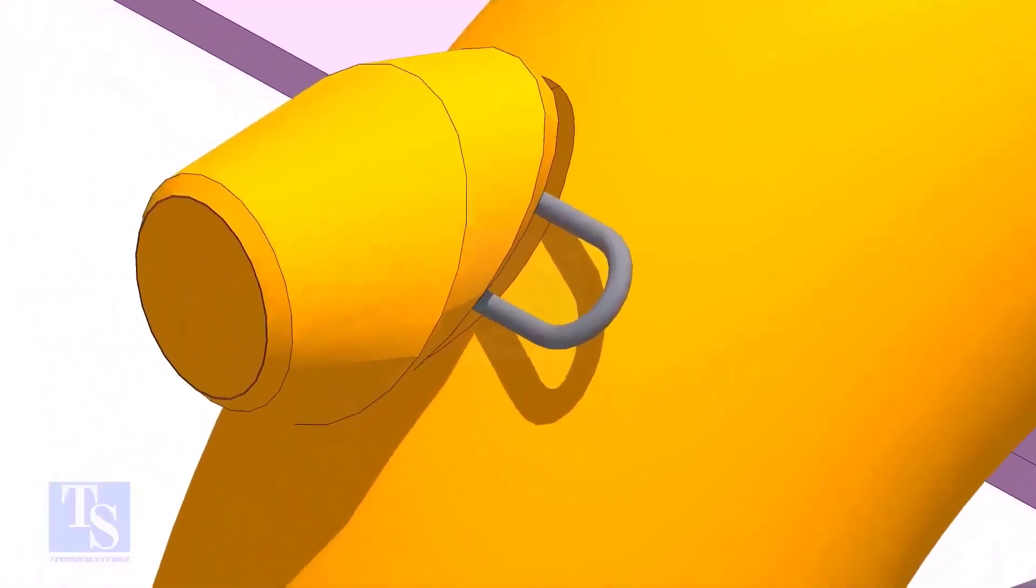Tack weld at one side of the elbowlet just to hold the elbowlet in its position. Don't make too big or too small tacks.